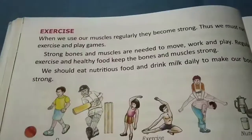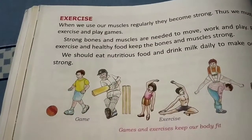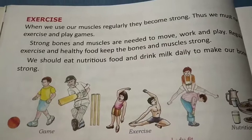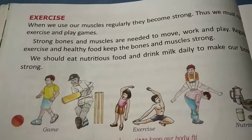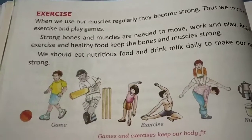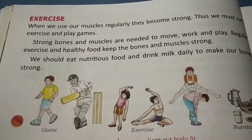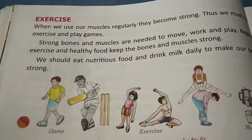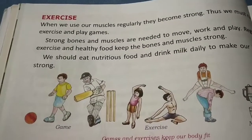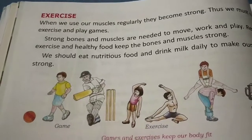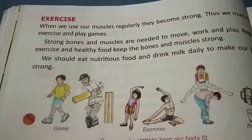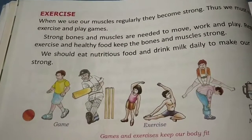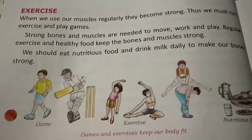Now we will study how we can keep our bones, muscles, and body strong. Exercise is the most important thing to do regularly to keep ourselves healthy and strong. When we use our muscles regularly — like running, jogging — they become strong. We should regularly exercise and involve ourselves in outdoor games such as playing football, basketball, or simply running and catching. These activities involve exercising our muscles and bones, which will keep them strong. Strong bones and muscles are needed to move, walk, and play.